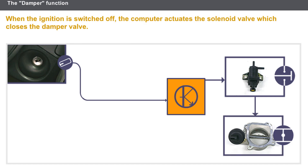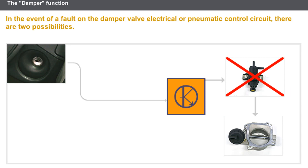The solenoid valve continues to be supplied for a few seconds. The valve opens again to prepare for the next engine start. In the event of a fault on the damper valve electrical or pneumatic control circuit, there are two possibilities: if the valve is stuck shut, the engine will not start or stalls after starting; if the valve is stuck open, the engine does not stop immediately and smoothly.